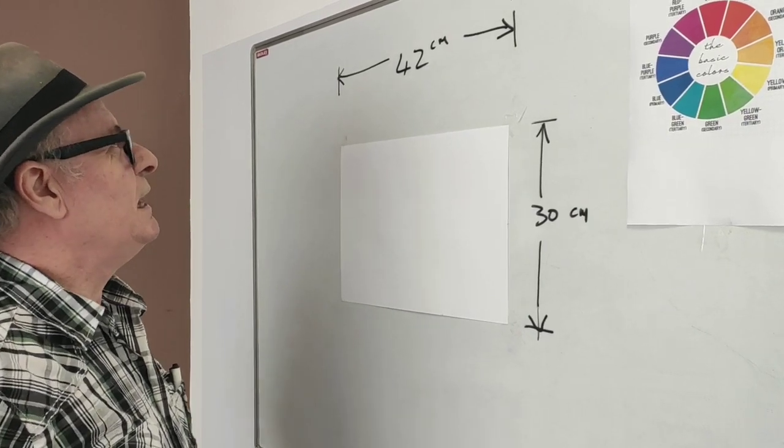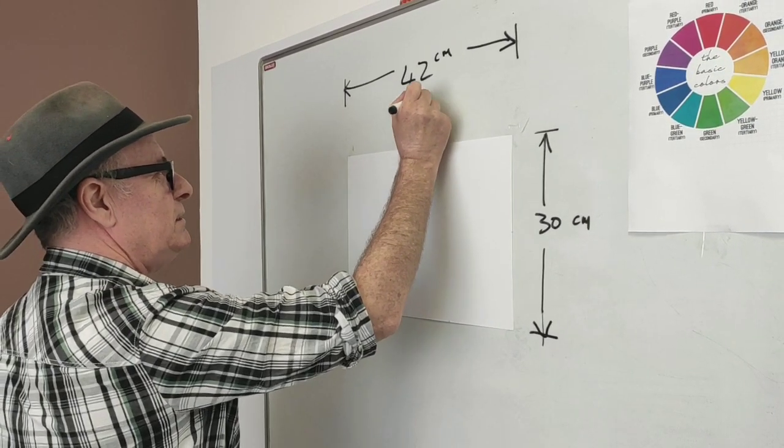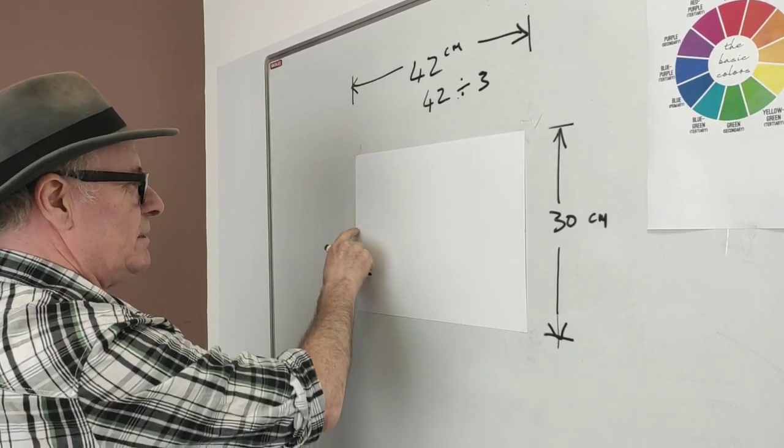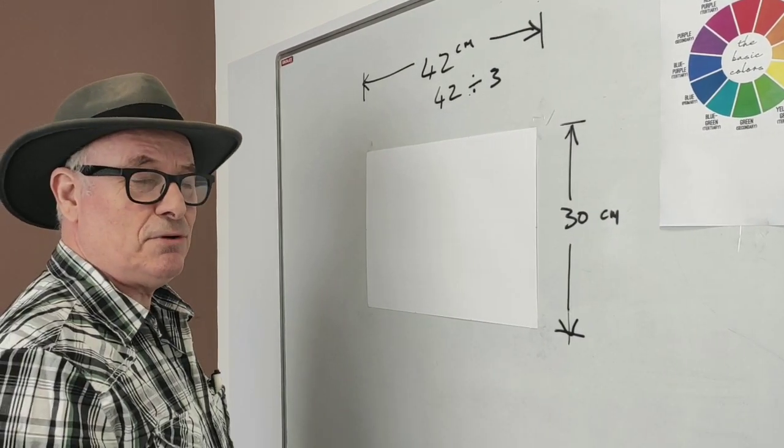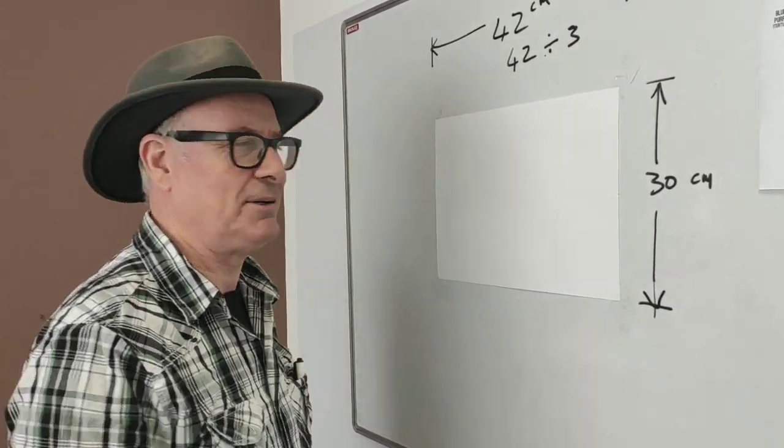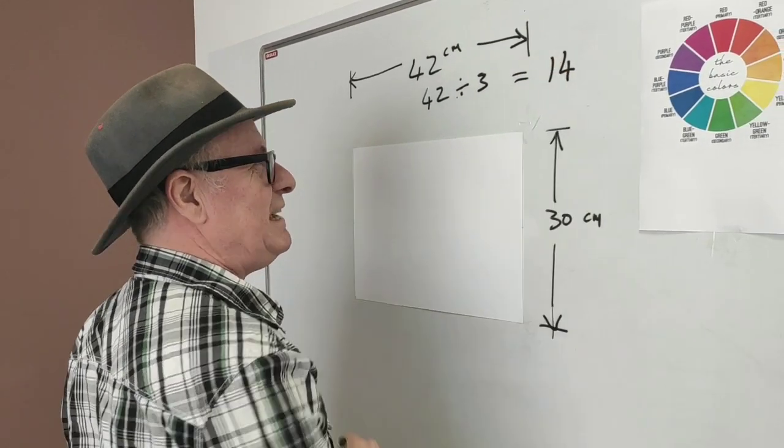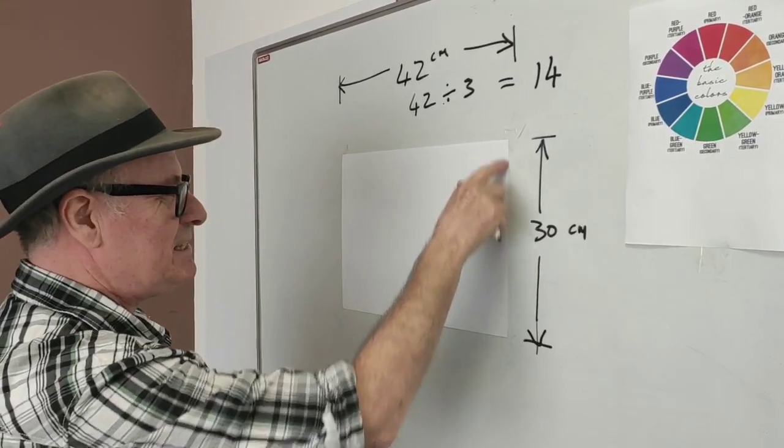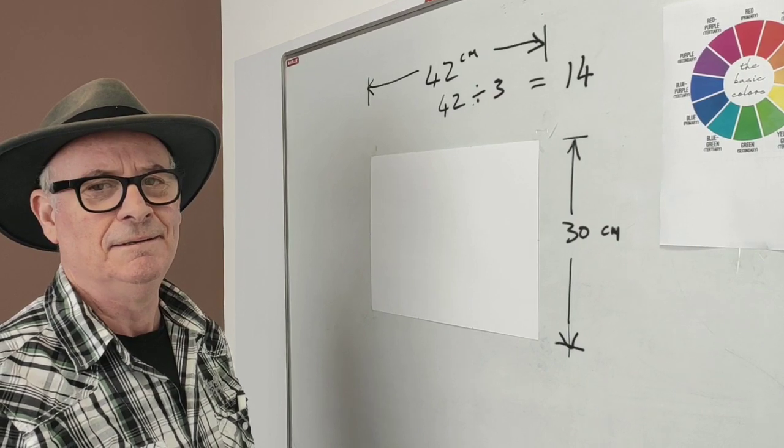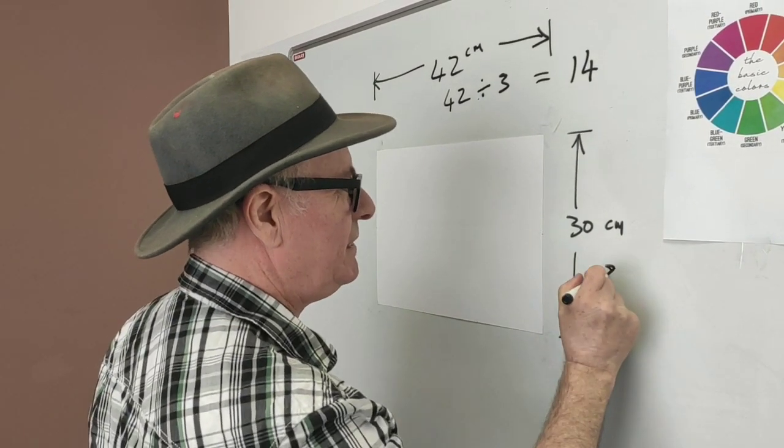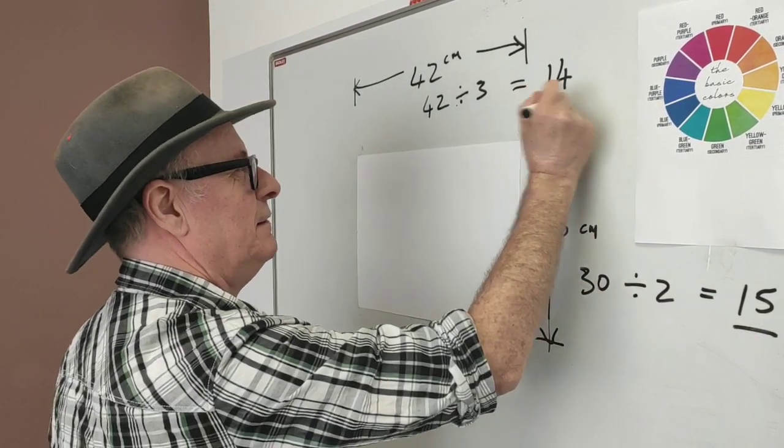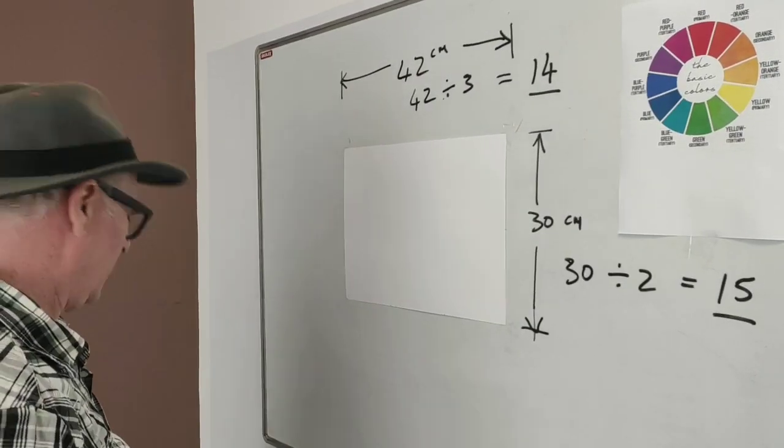So what we need to do is we need to divide 42 divided by 3 because I want six squares. 42 divided by 3. Anybody know? Libos, what's 42 divided by 3? I have no idea. Oh, God! You can't get good help nowadays. 14! And this, we need to divide in 2. 30 divided by 2, Libos, come on. 10. 30 divided by 2 equals 15. Libos is not very good at maths, is she? No.